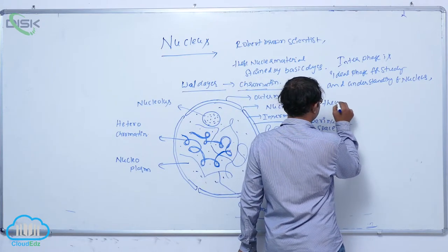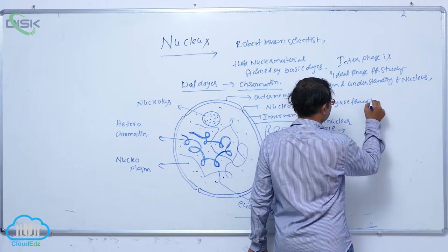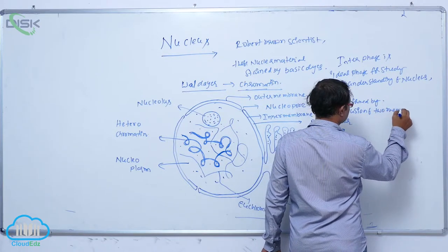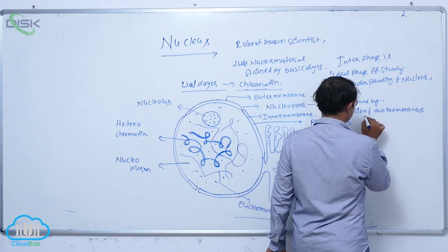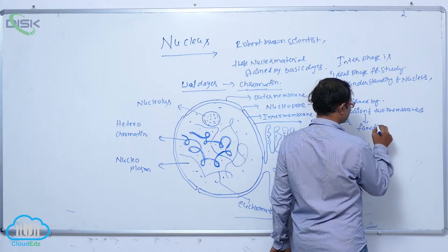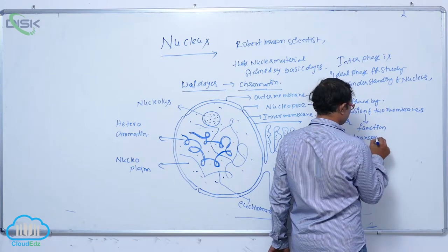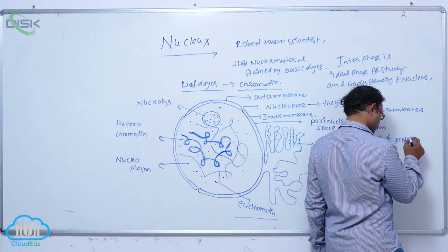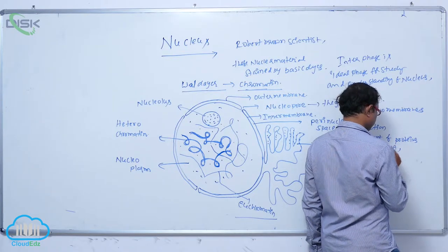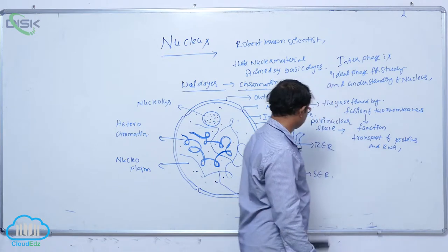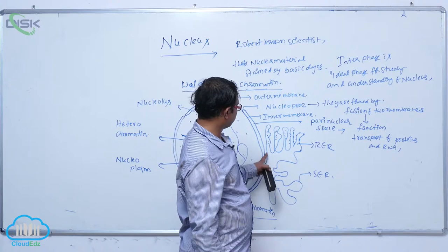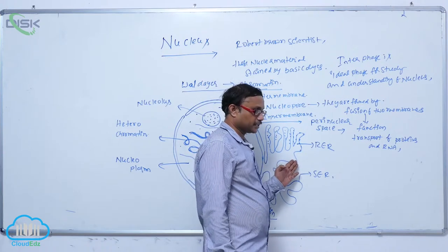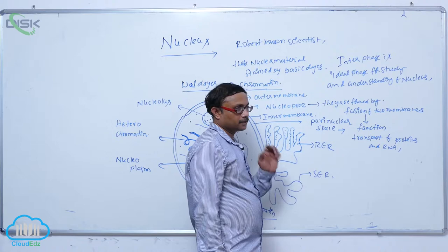Nuclear pores are formed by fusion of the two membranes. Their function is the transport of proteins and RNA from the cytoplasm to the nucleoplasm and from the nucleoplasm to the cytoplasm. The outer membrane is an extension of the endoplasmic reticulum, forming a network structure extending into the cytoplasm.